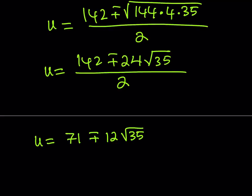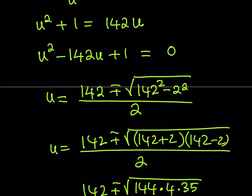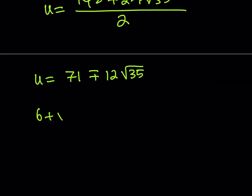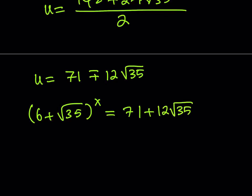Now here's the tricky part. We found u, but what is u? We defined u as 6 plus root 35 to the power x. So 6 plus root 35 to the power x equals 71 plus or minus 12 root 35. Since the base 6 plus root 35 is positive, raising it to any integer power stays positive, so the negative solution doesn't lead anywhere useful. We use the positive version: 71 plus 12 root 35.